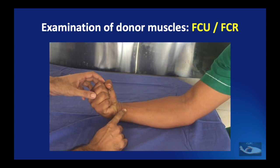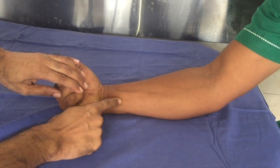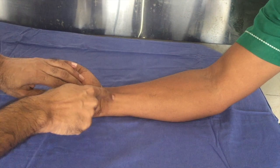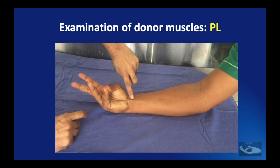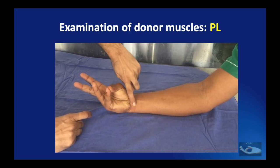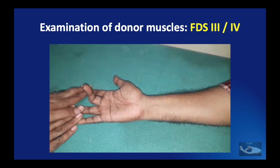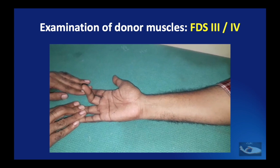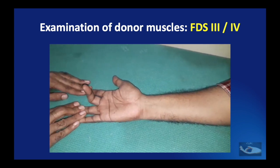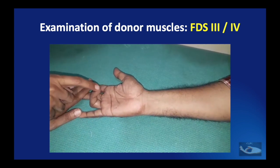To test the flexor carpi ulnaris and flexor carpi radialis, the patient is asked to flex the wrist against resistance, and while this is being done both tendons can be palpated. To test the palmaris longus, the patient is asked to oppose the little finger and thumb and then flex the wrist against resistance — the palmaris longus tendon can be seen standing out as a strand under the skin. Finally, to test the flexor digitorum superficialis of the middle and ring fingers, the other fingers are restrained and the patient is asked to flex the tested finger; flexion should occur at the proximal interphalangeal joint and the distal interphalangeal joint should remain lax, confirming isolated FDS action.